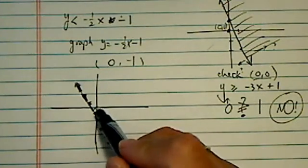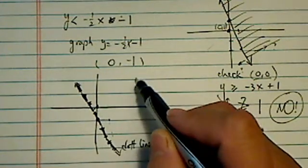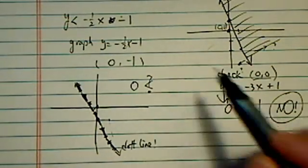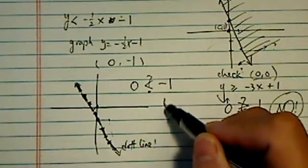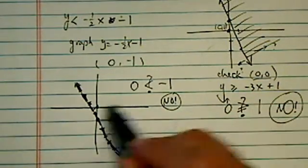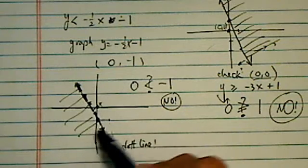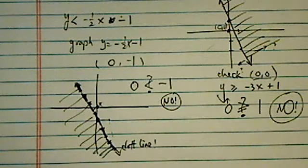Alright, now we're going to use (0,0) again to test it. If I plug it in there, is 0 < -1? The answer is no, so I don't want this point. I want everything that's away from (0,0). That's how we handle this type of problem.